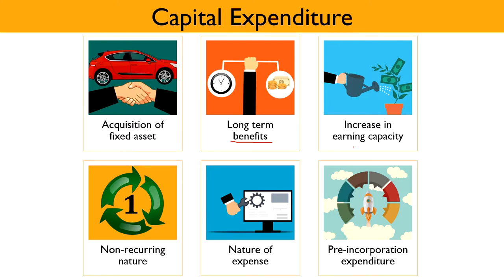Next is Increase in Earning Capacity — the expenditure must help in increasing the earning capacity or reducing the operating expenses of the business organization. Non-Recurring Nature means the expenditure should not occur on a frequent or regular basis. Nature of Expense means the expenditure should be directly related to the acquisition, installation, or erection of the fixed asset. It may also cover expenditure incurred in connection with substitution of a new asset for an old or existing one.